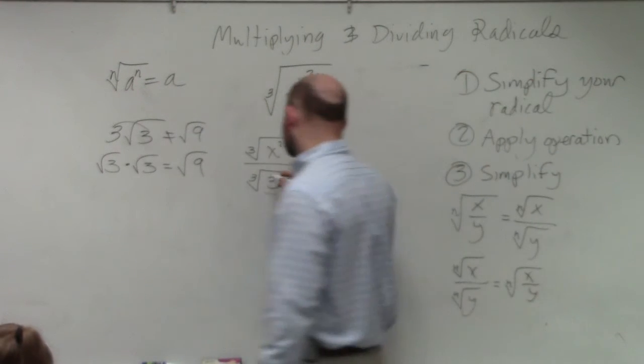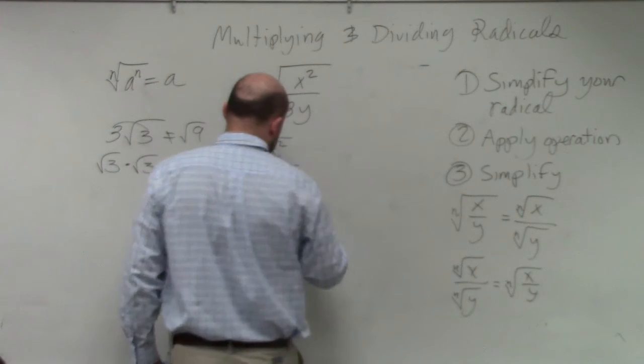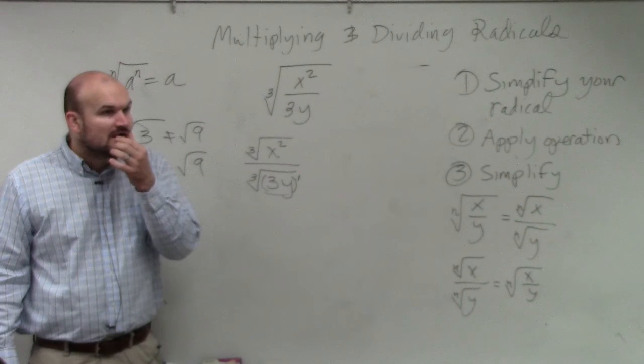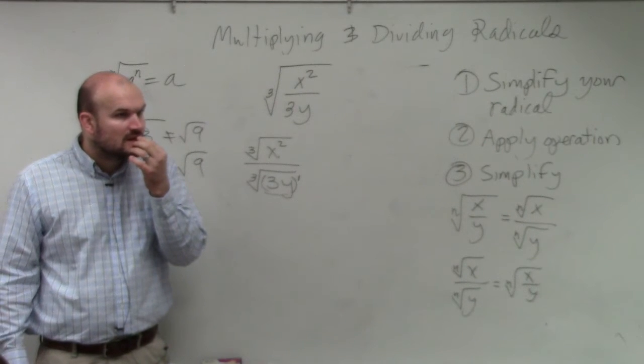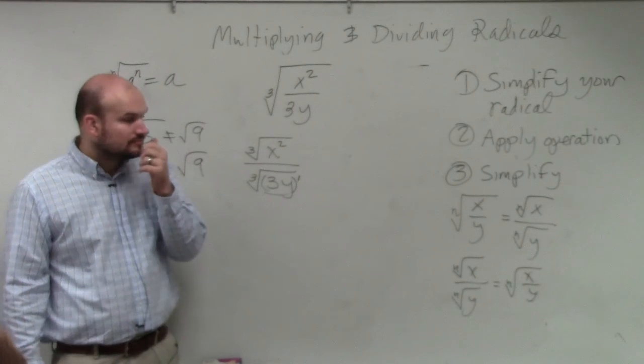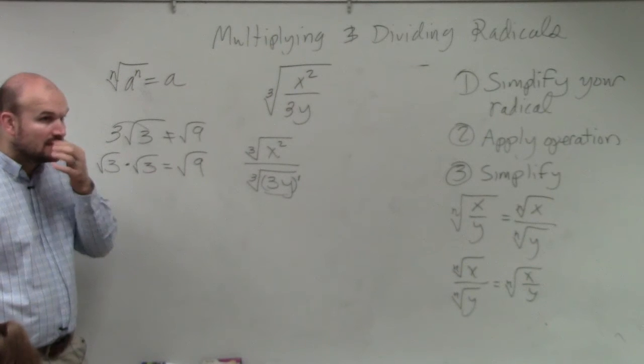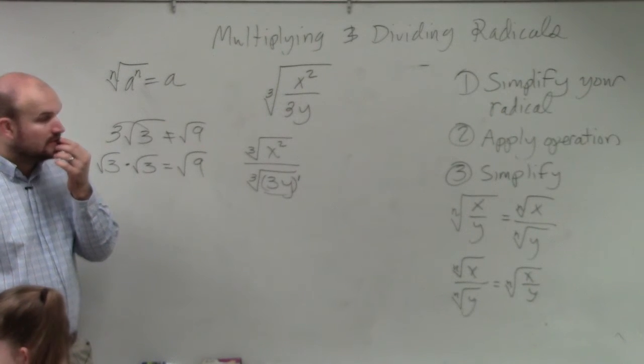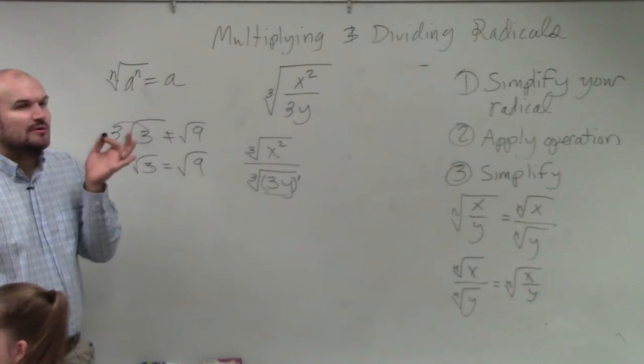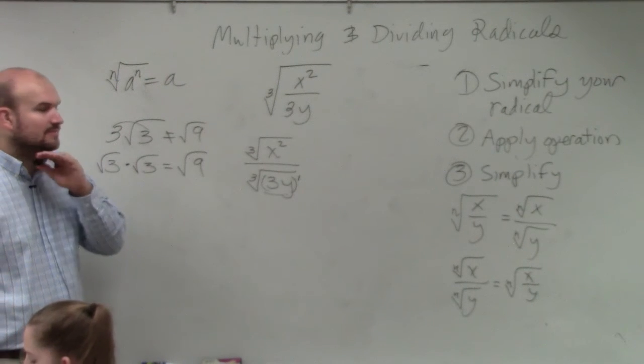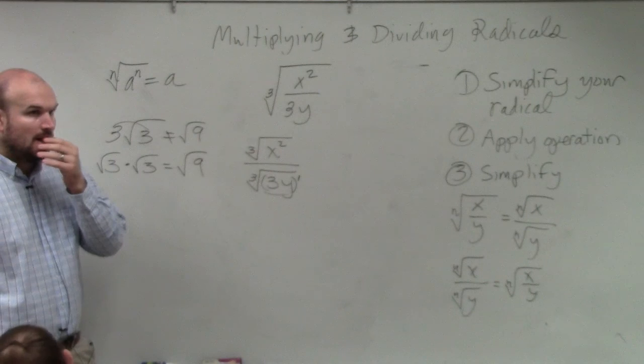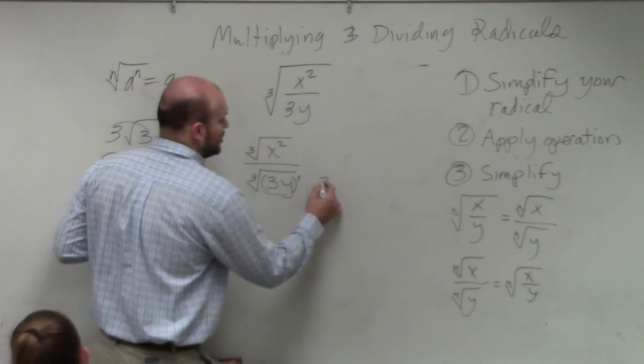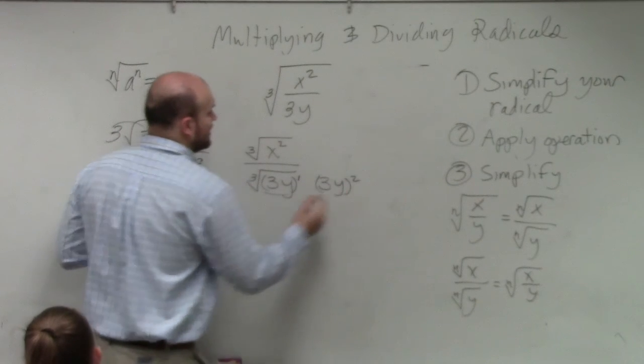So if I write this as like 3y to the first power, what would I need to multiply by? Just think of it as powers. Forget about numbers. Think of it as raised to it as exponents. So what I would do is I would need to multiply 3y times 3y squared.